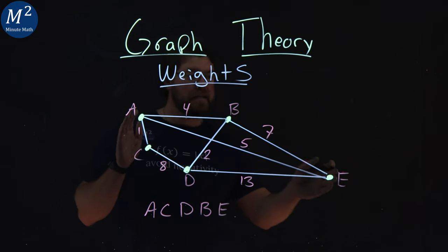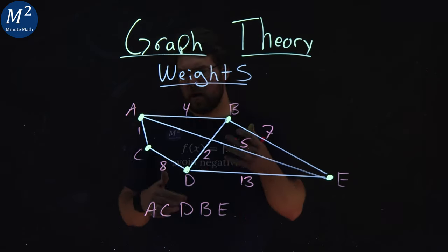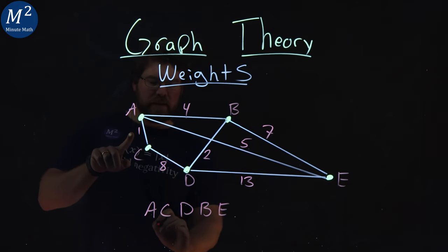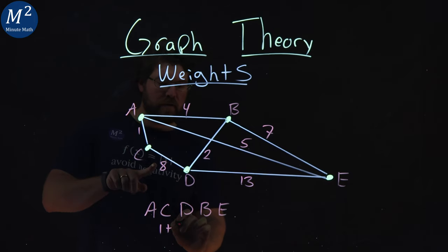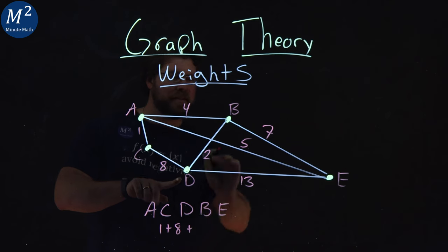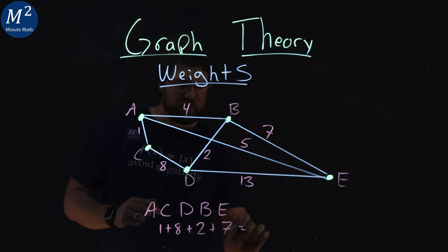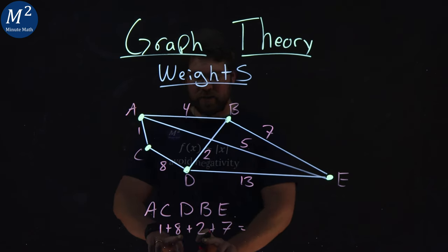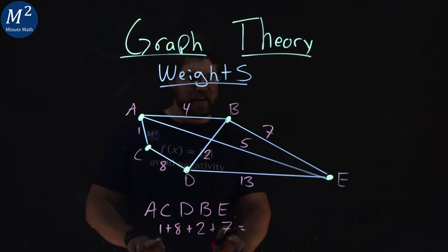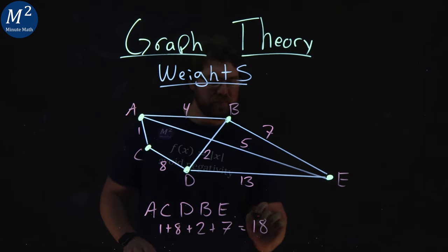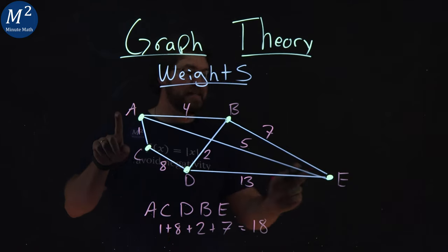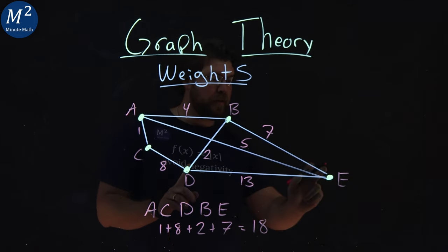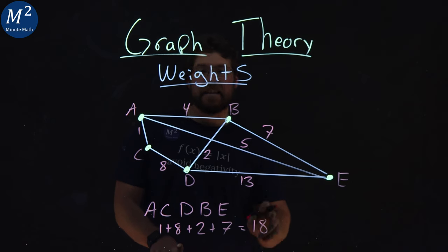So a path from A to E would have an overall cost. We have A to C is one, plus eight, plus D to B is two, plus B to E is seven, and that's ten. Eight and two is ten. We have eleven here plus seven is eighteen. And so the cost from going A to E on this specific path would be eighteen.